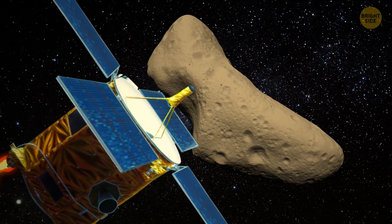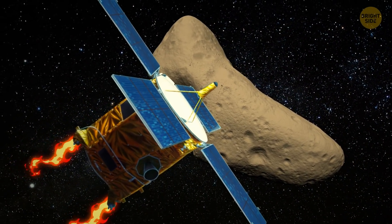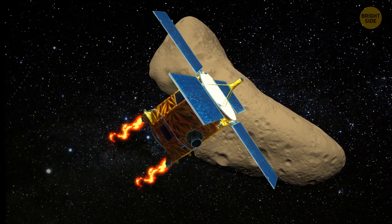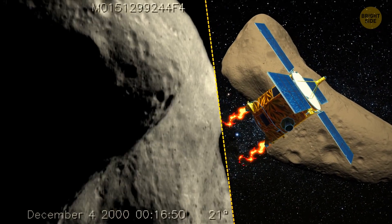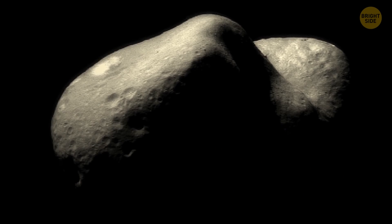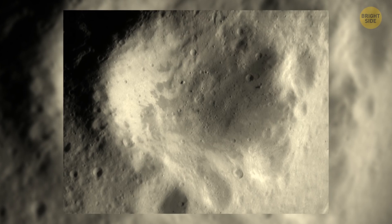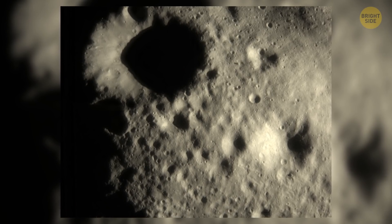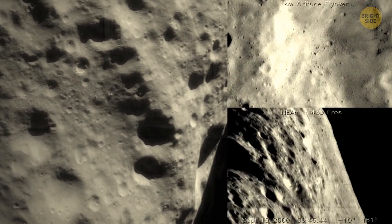NEAR Shoemaker was created to find, target, and stalk some smaller space objects for around a year, and collect important data about them. This spacecraft got more than 160,000 pictures of the asteroid's surface, which helped with research in the years to come.